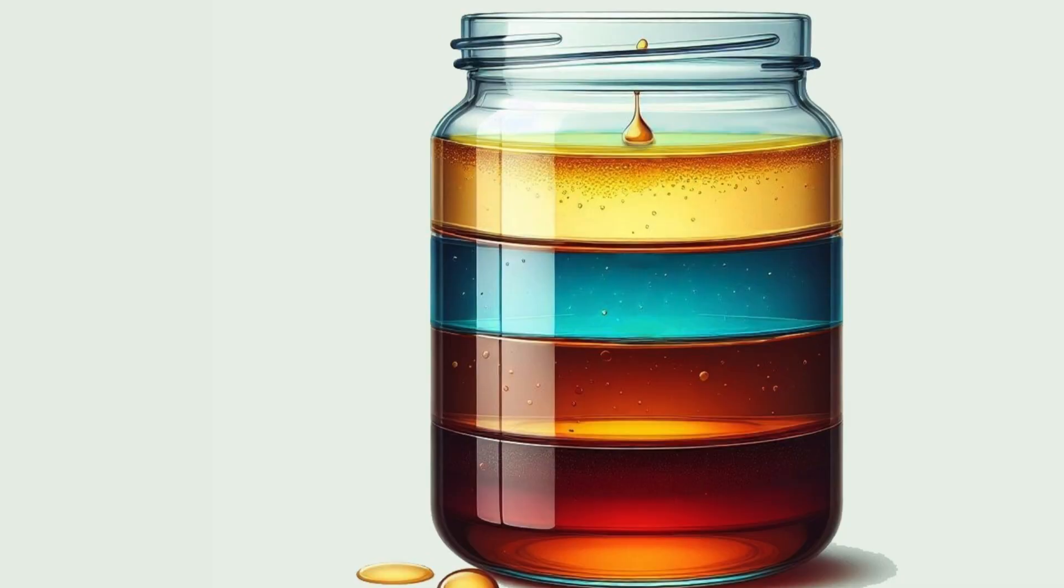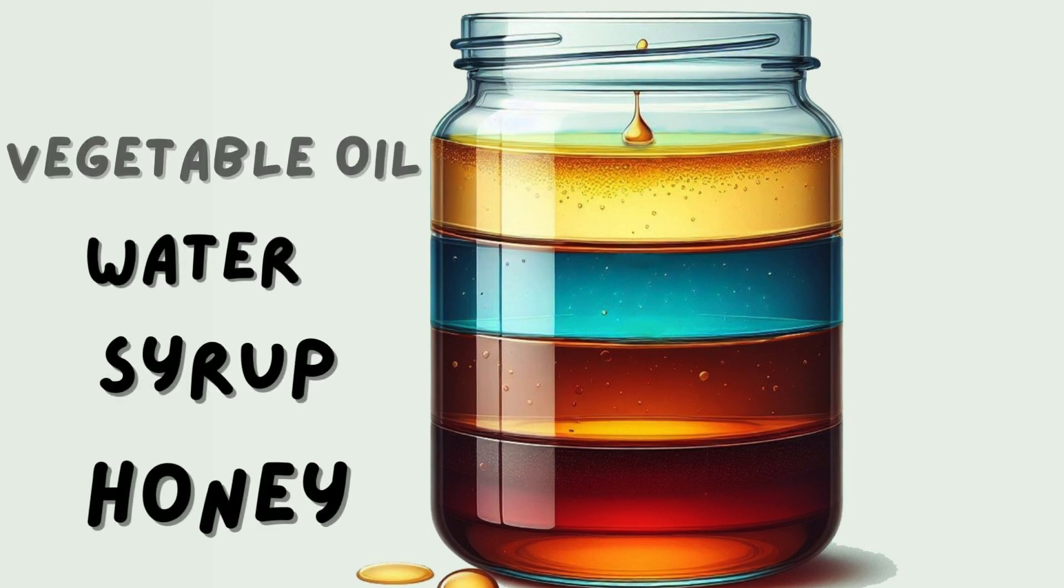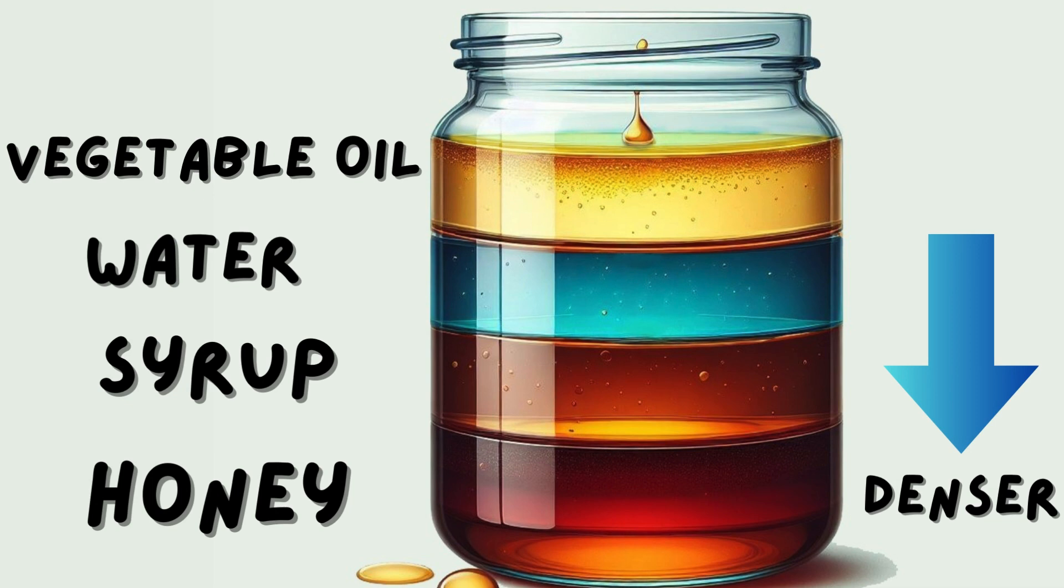So, when we carefully layered these four liquids - honey, syrup, water, and vegetable oil - the denser ones sank to the bottom, while the less dense ones floated on top.